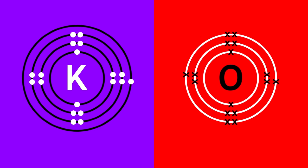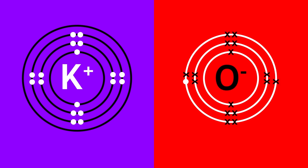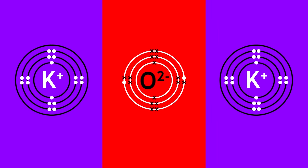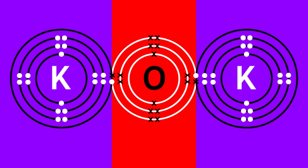If potassium transfers its valence electron to oxygen, oxygen will only have 7 electrons. Oxygen will want one more electron to fill its valence shell, and it gets this electron from another potassium atom. So two potassium ions are formed, and these two will be electrostatically attracted to the oxide ion. Note that the charges are fully balanced, so potassium oxide has an overall neutral charge.